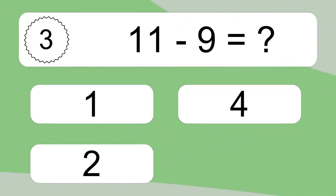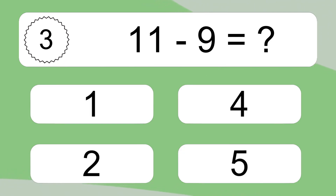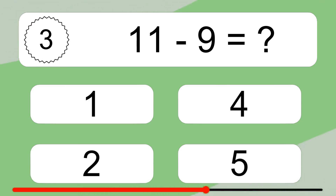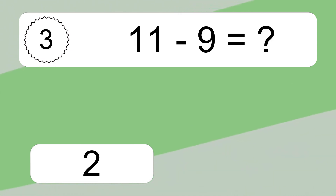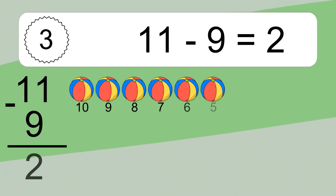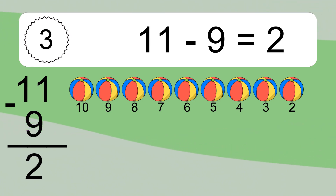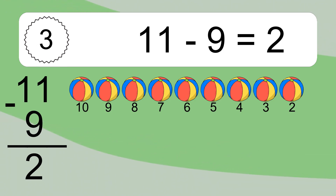11 minus 9 equals what? 11 minus 9 equals 2. Let's count it. 10, 9, 8, 7, 6, 5, 4, 3, 2.